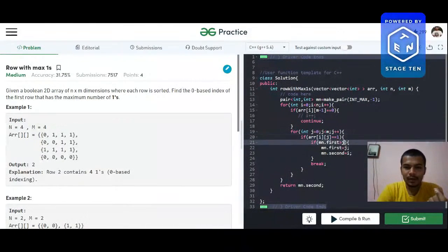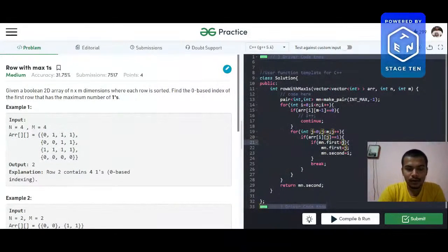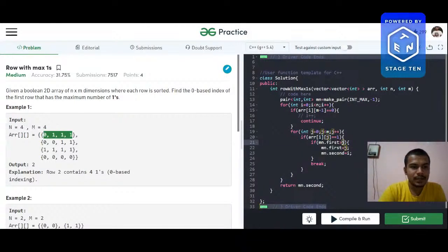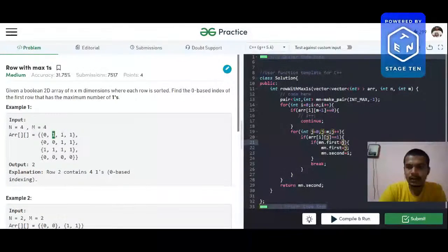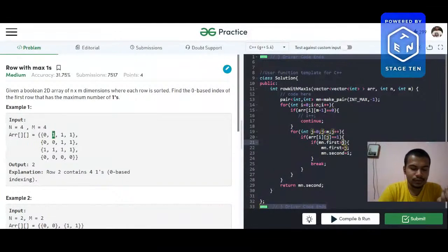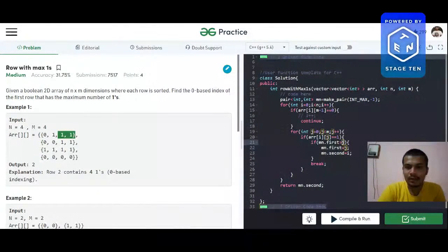So this if block is doing that whenever we encounter one for the first time, we compare the column index to our minimum column index. If our minimum column index is greater than the current column index, say we are here, this is the maximum, so maximum is of course greater than one. So we will assign one to our minimum column index. Then we go to the next row and we don't need to check for other ones because we have a break statement.